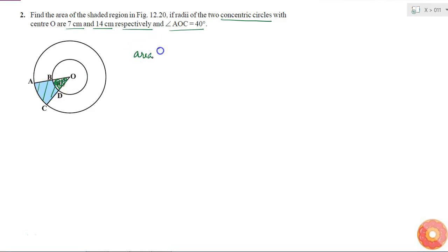Area of shaded part is equal to area of sector OAC minus area of sector OBD.